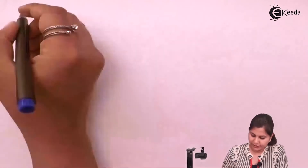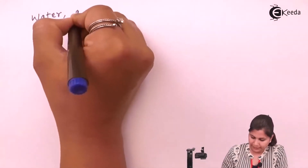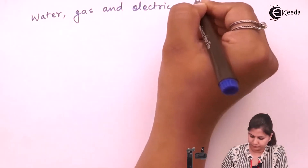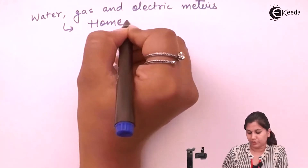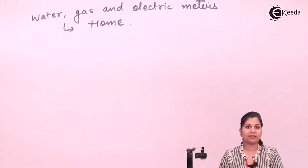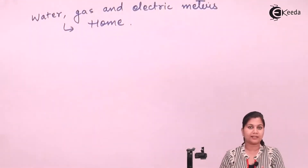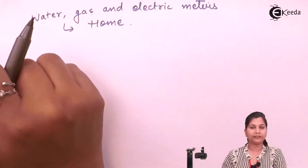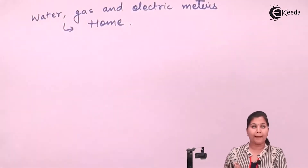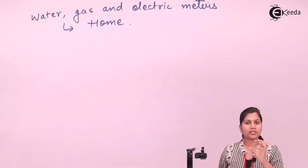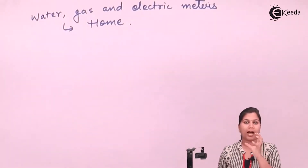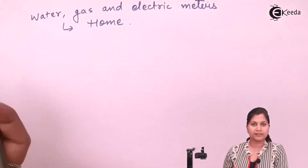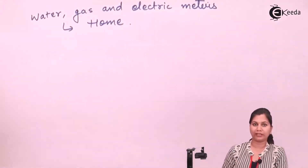Other examples include water, gas, and electric meters present in our homes. The water meter tells us how much water is being consumed, the gas meter tells us how much gas is consumed, and the electric meter tracks electricity use. These meters give us the value of the quantity consumed during a month, but there is no controlling function — they are just monitoring the quantity so we can calculate the cost.